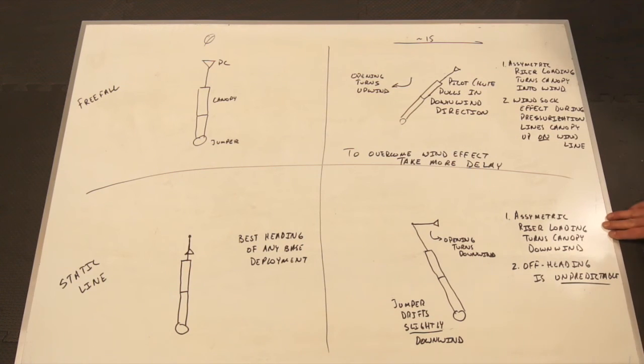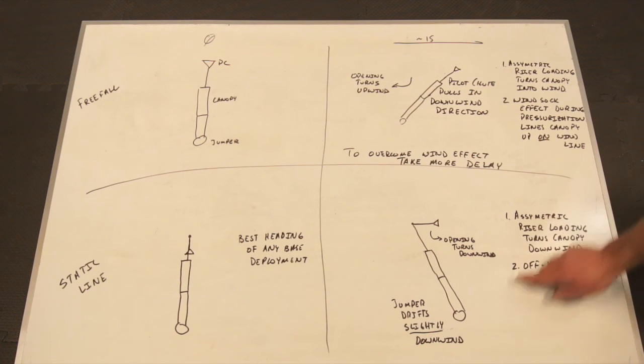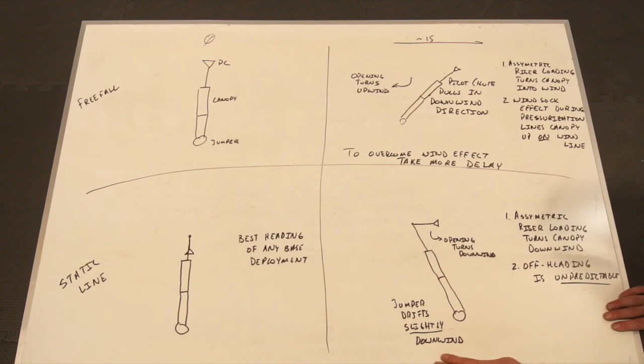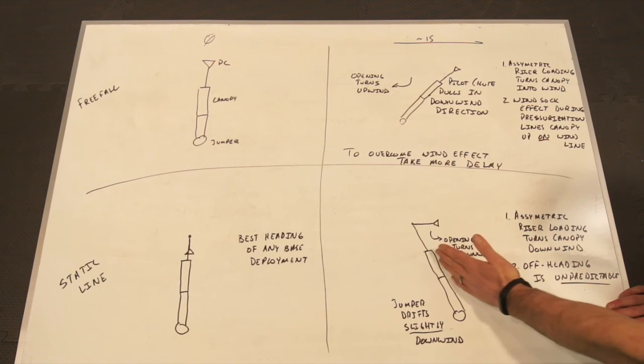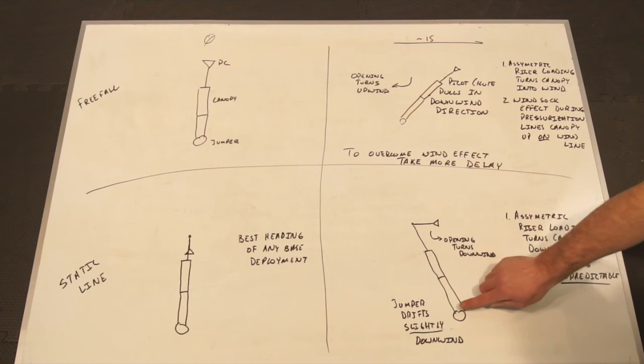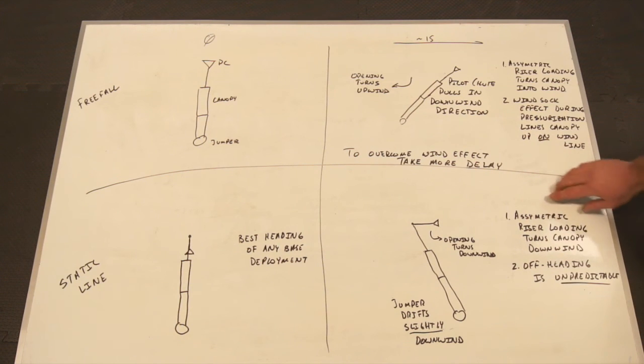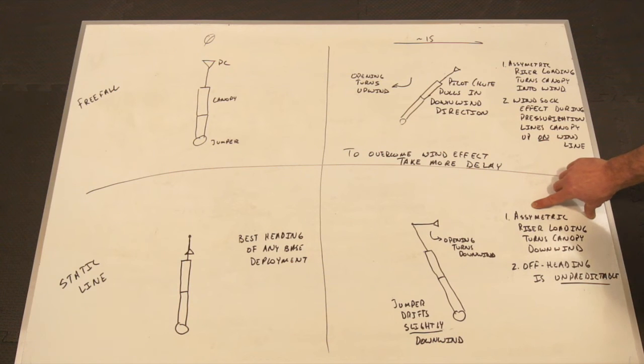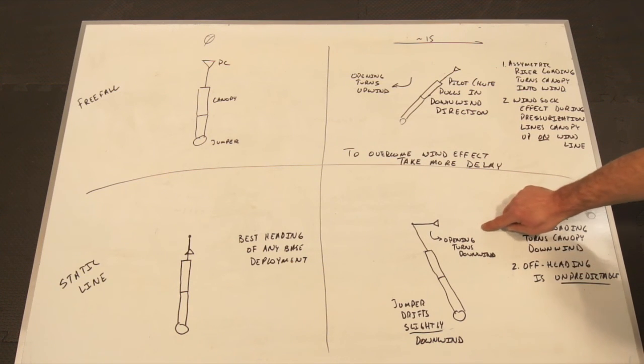Contrast that to the static line deployment. On a static line or PCA in a crosswind condition, we still see the same asymmetric riser loading, but it's working the other way. What happens is that as the jumper begins his free fall, he drifts very slightly to one side. That means the static line attachment point is no longer centered between the risers, creating asymmetric riser loading in the downwind direction. In this case, what we see is the canopy turning downwind.